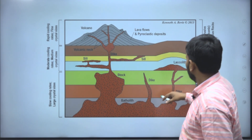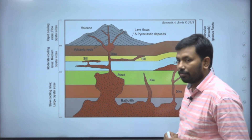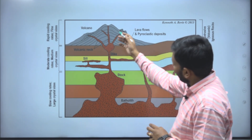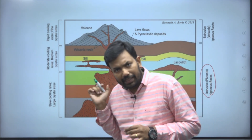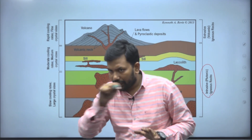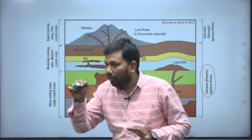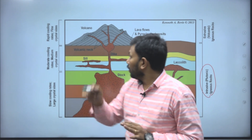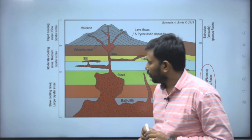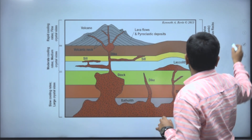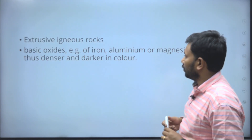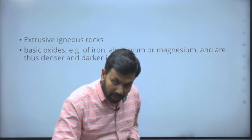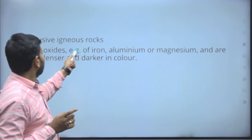He is asking about primary rocks, which are igneous rocks. Batholith and stock — these types of structures where magma is stored inside — you have to write about those. You may draw a basic block diagram showing magma stored inside called primary rock, and when it comes out it becomes extrusive rock. That is very important — even a basic block diagram is sufficient. Extrusive igneous rocks are those which come out.